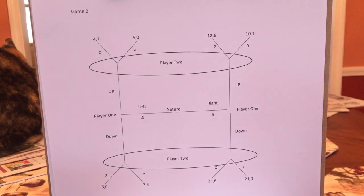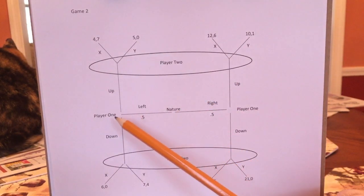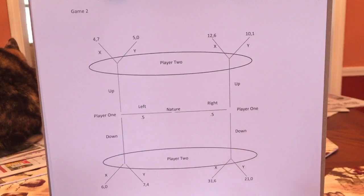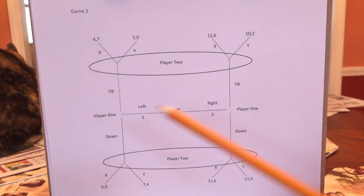So this is the same structure as the previous game. And we start here with Nature. Nature will move left half the time and right half the time. With these games, it's generally best to look for dominant strategies. And there's four places to look.